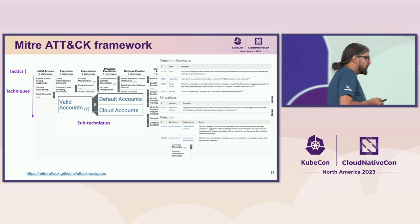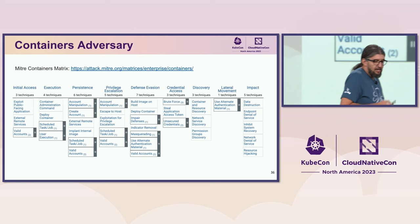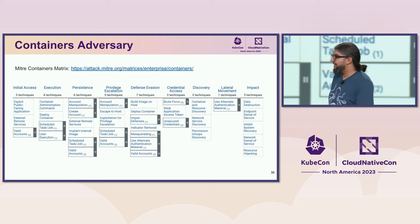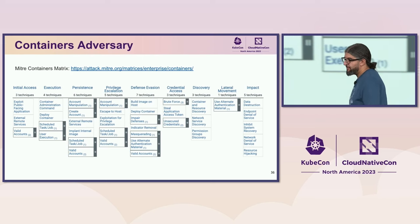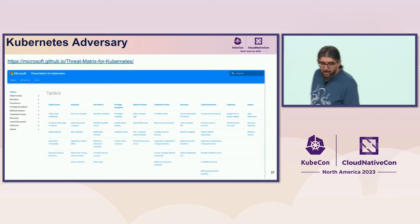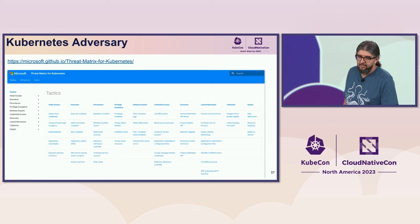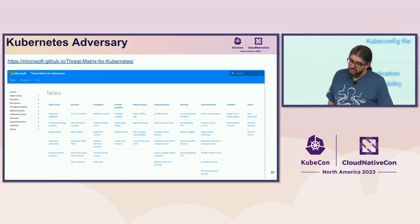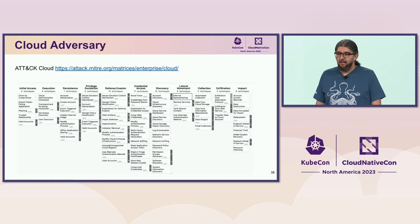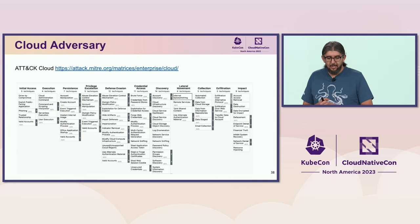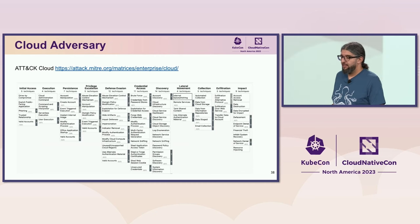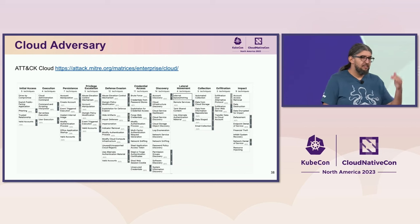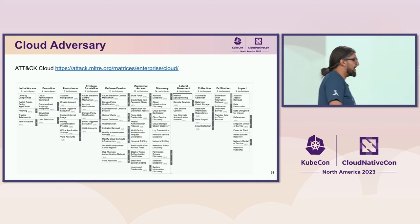MITRE ATT&CK has dedicated matrices for containers, showing all tactics, techniques, and procedures relevant to container environments. Microsoft has also created a Kubernetes-focused matrix with its own tactics, techniques, and procedures. For cloud providers, you can get matrices for the top three — AWS, Google Cloud, and Azure — each with cloud-provider-specific procedures.